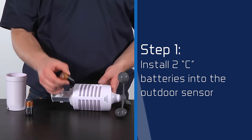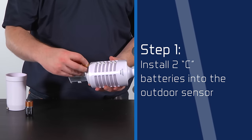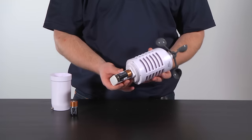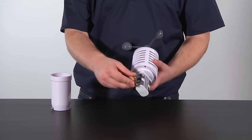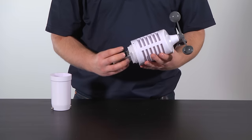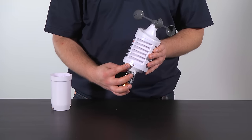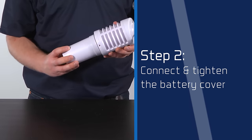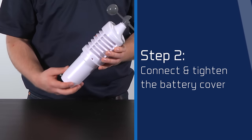The first step in the initial setup here will be to install two C batteries into the outdoor sensor. If you are using this item for the first time in its out-of-the-box condition, its cover will already be off. After the batteries are installed according to polarity, the red light will flash when transmitting. After you see the light flashing, step two will be to connect the battery cover and tighten it by turning it to the right.